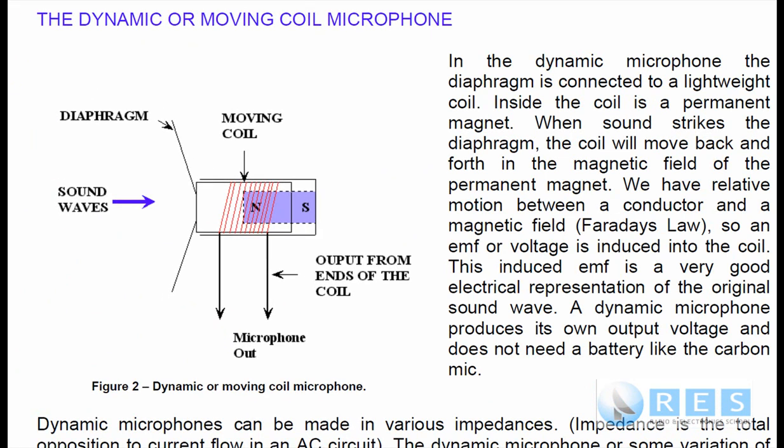Moving down the page, we come to the dynamic or moving coil microphone. I'd like to remind you about the GIF animation on the Radio and Electronic School website of Faraday's Law — click on Supplementary Downloads and look for it. That's where the magnet goes in and out of the coil with a galvanometer demonstrating Faraday's Law: when relative motion exists between a conductor and a magnetic field, an EMF or voltage is induced into the conductor. That's the principle of operation of the dynamic or moving coil microphone.